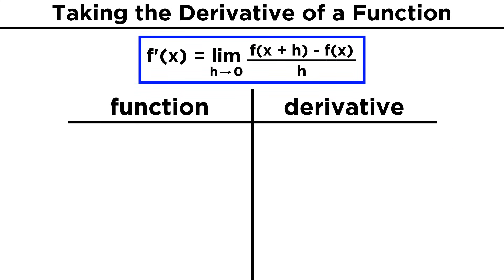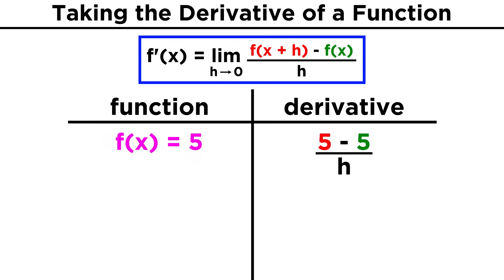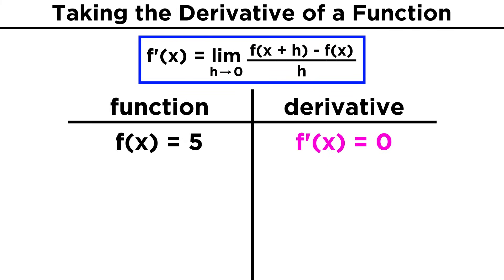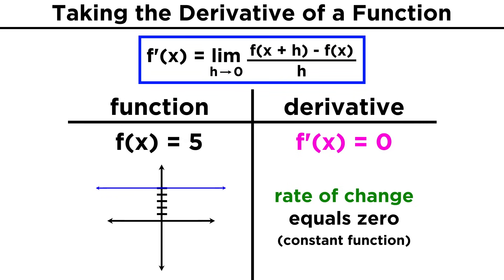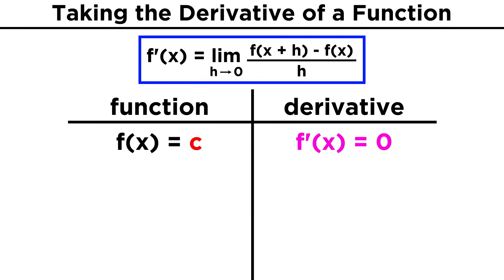Let's use this expression to take the derivative of some different functions. Let's start with something easy — a constant function like f of x equals five. If we take the derivative of this, when we go to plug in values for f of x plus h and f of x, these will both be five, because no matter what point on the function we are talking about, it's equal to five. Five minus five is zero, so as h approaches zero, f prime of x will become zero. This makes sense, as the rate of change anywhere on this function is zero, because the value of the function never changes. So the derivative of a constant — any constant — will always be zero.